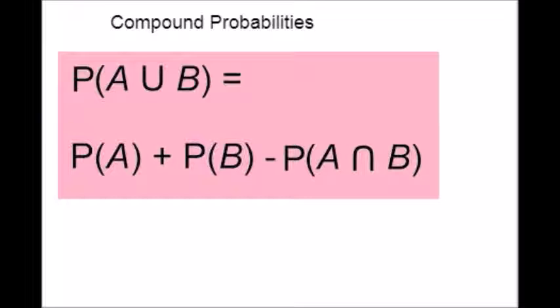Else, the events are termed as dependent events in case the outcome has an impact or effect on the outcome of the other. So this is the basic definition of compound probability.